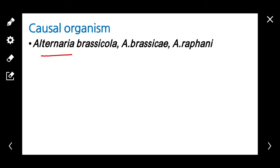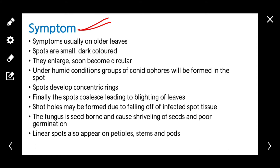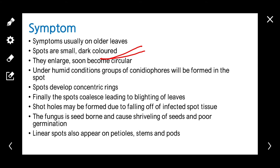Coming to symptoms: symptoms usually appear on older leaves. Spots are initially small and dark colored. With time they enlarge and soon become circular. Under humid conditions, groups of conidia will form in the infected spots. Spots are developed in concentric rings.